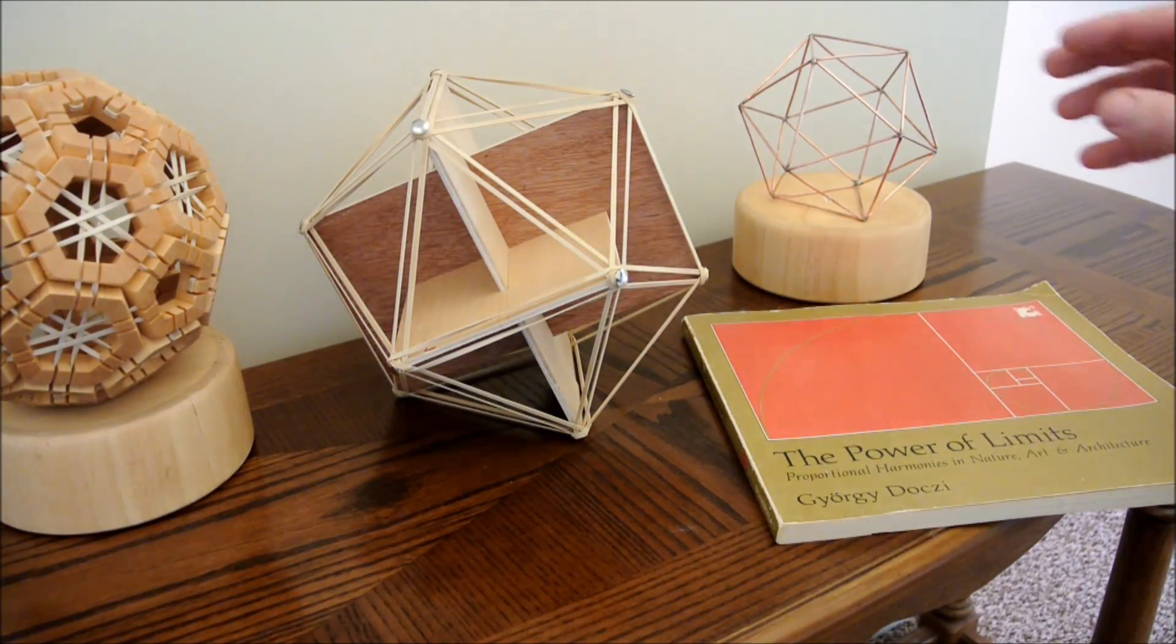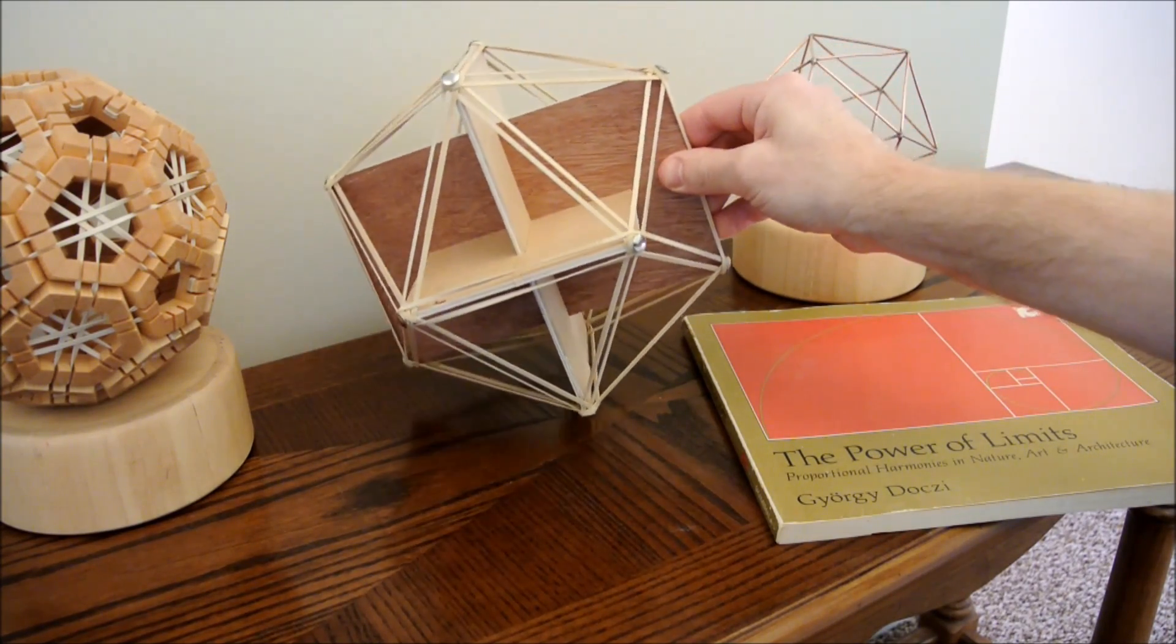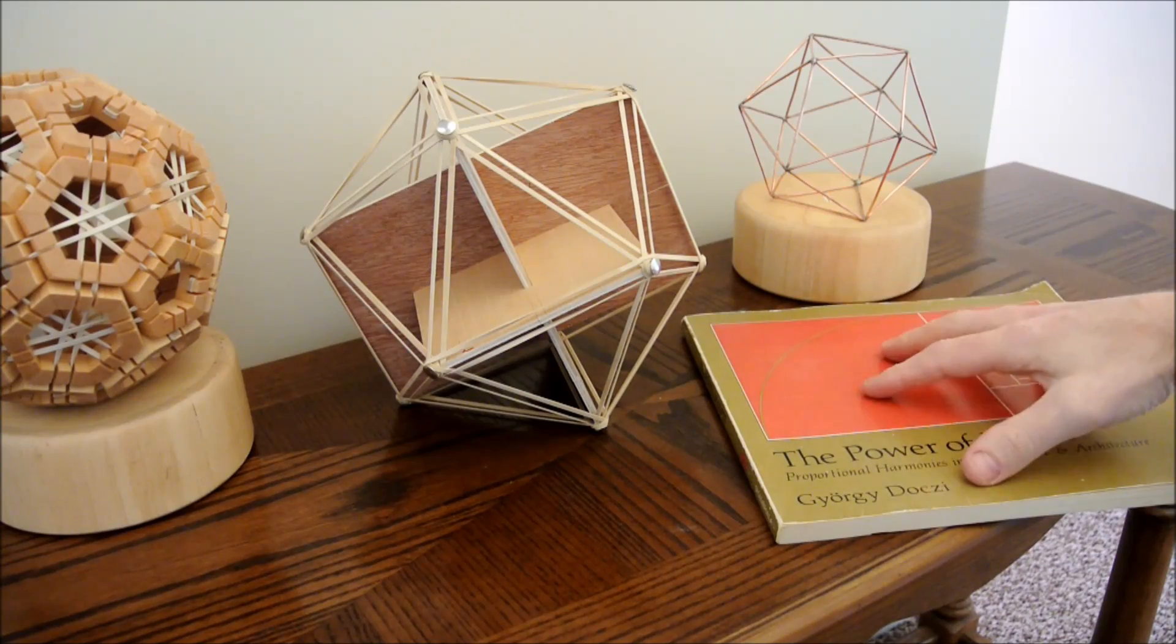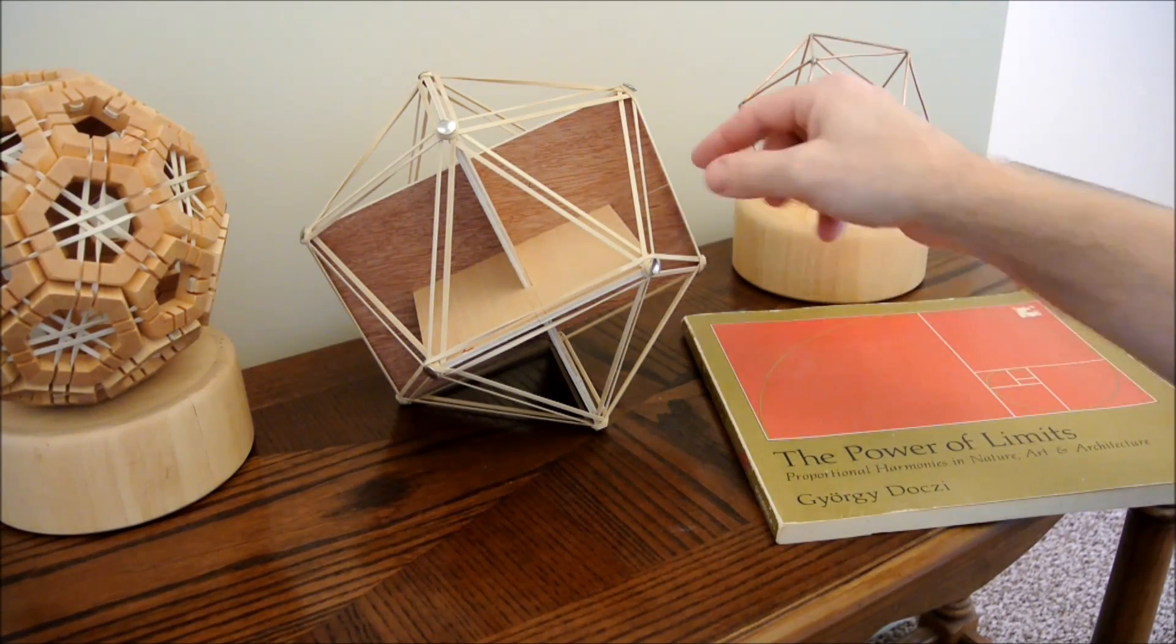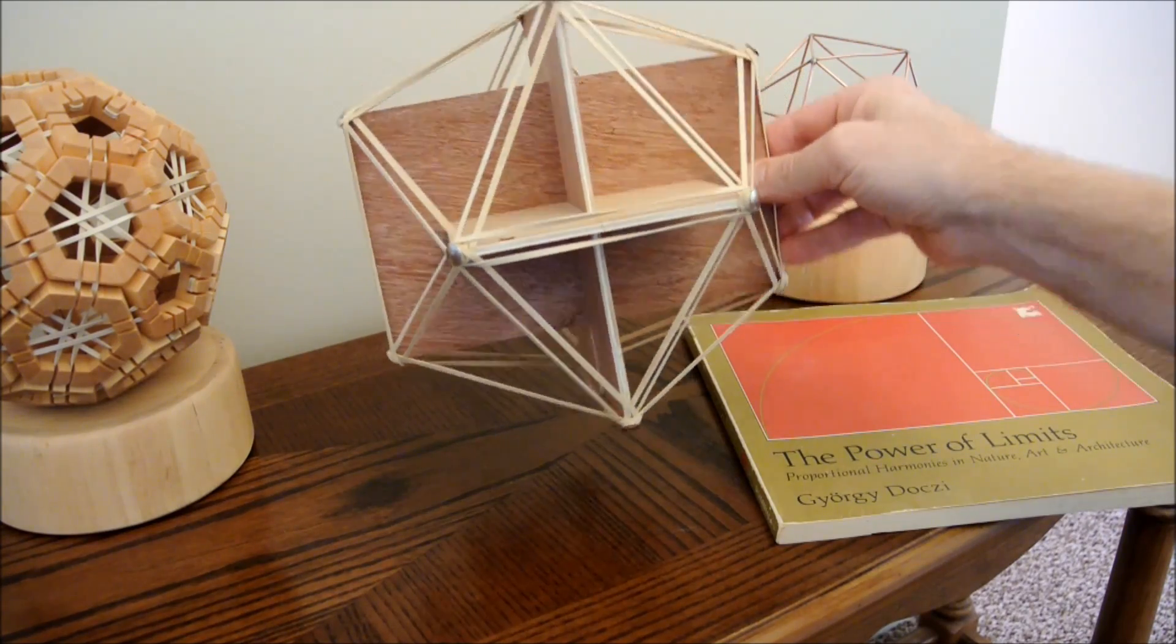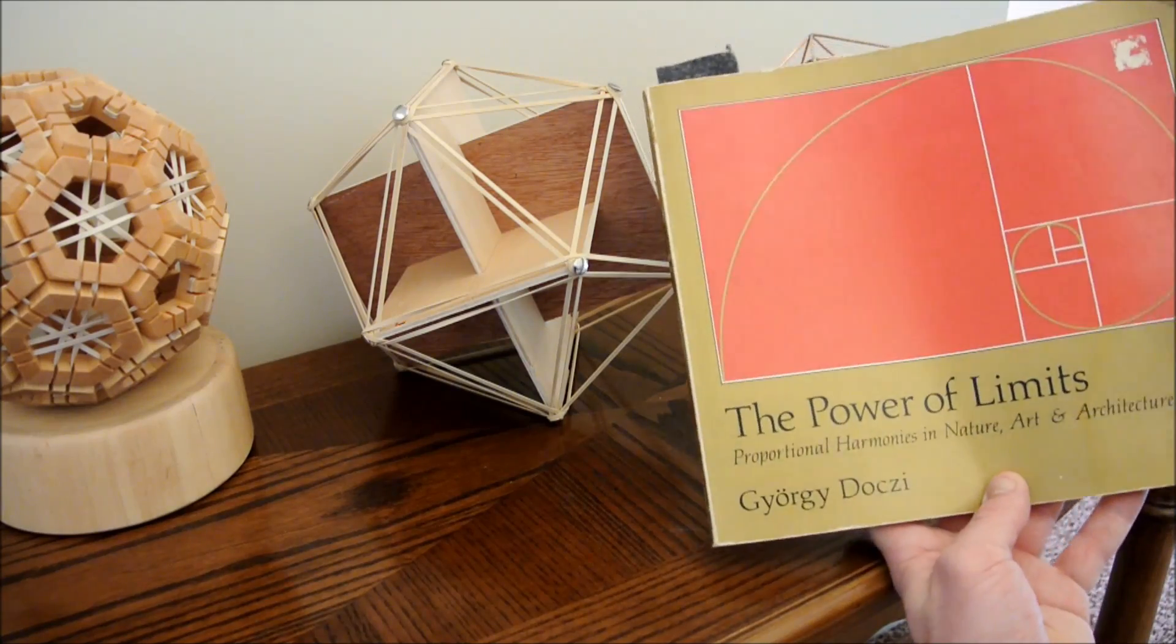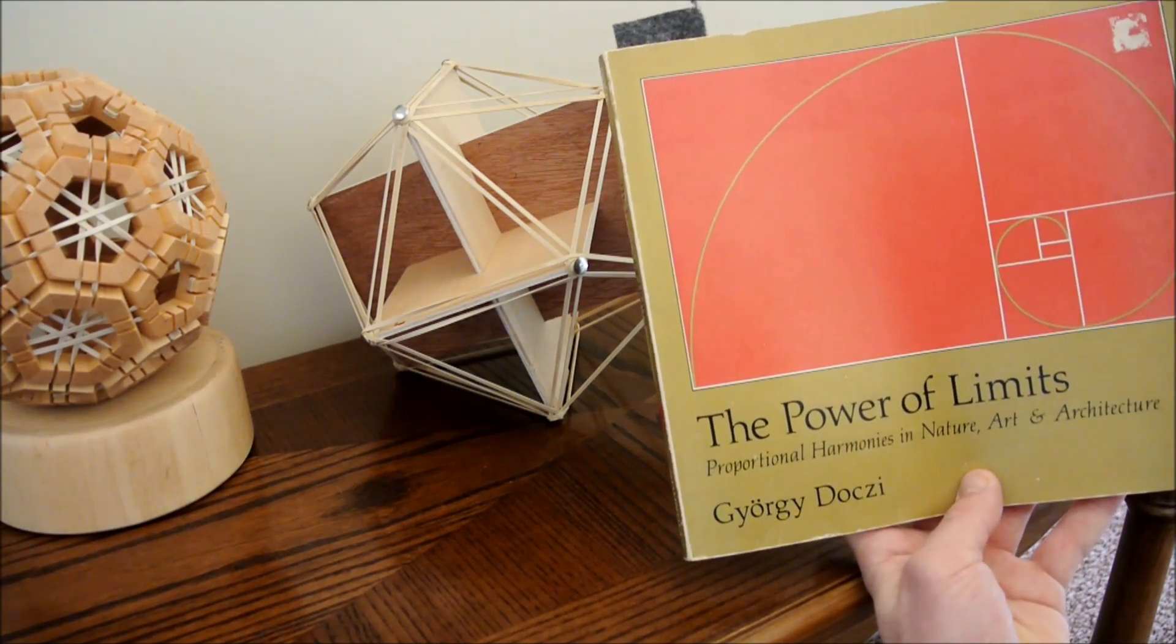Like so many things in the world, this is a re-imagining of an old idea, and I actually found something similar in this book here. What I think is so interesting about this version of an icosahedron is that it's based on the golden rectangle, which is defined by the Fibonacci sequence.